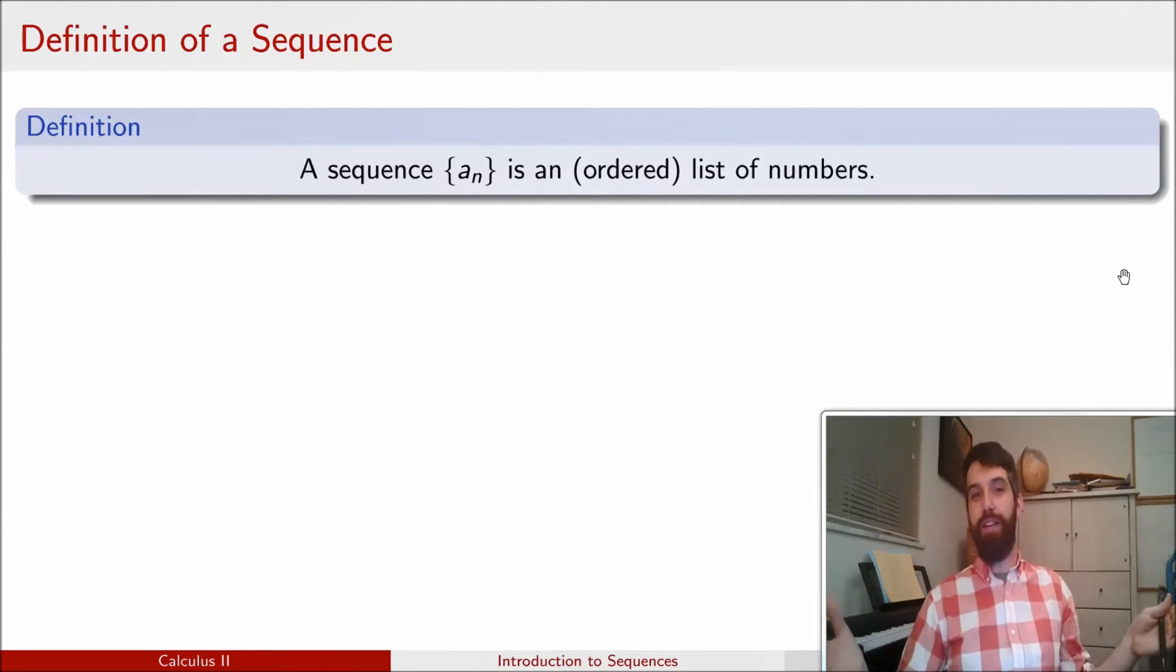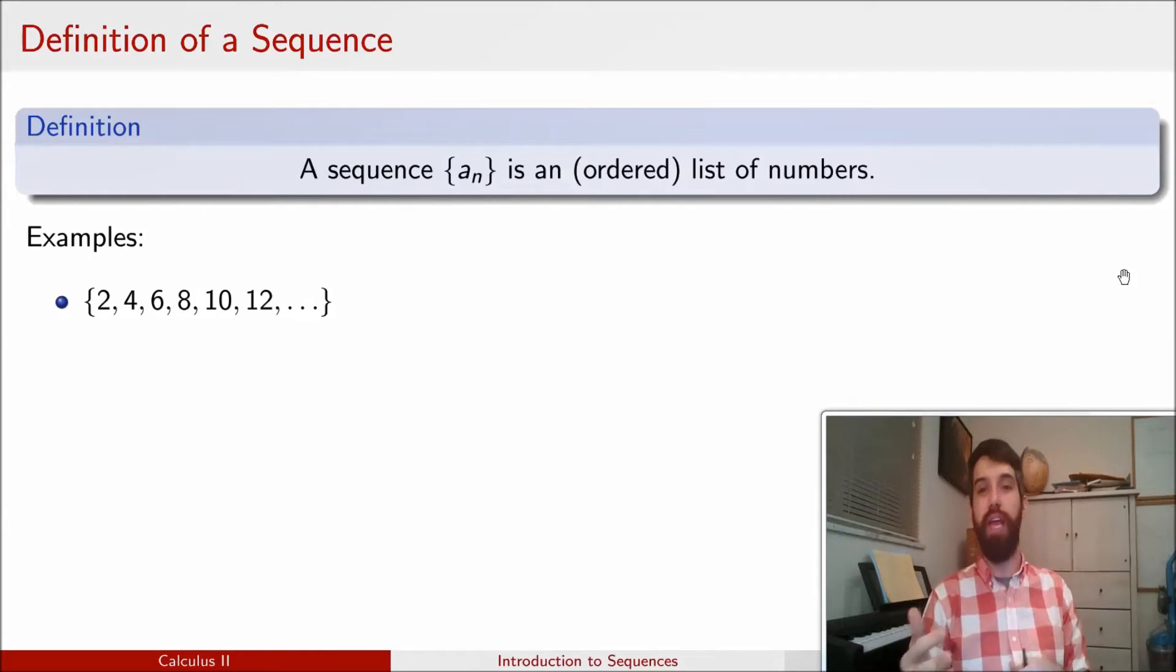A sequence is a list of numbers, something like 2, 4, 6, 8, 10, 12, you get the pattern. It's an ordered list in the sense that there's a first term, there's a second term, there's a third term. And in this course, we're generally going to think of it as being an infinite list as well, where we're not really concerned about a sequence with five terms. But the types of questions we're going to be concerned with are going to deal with infinite sequences.